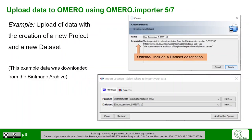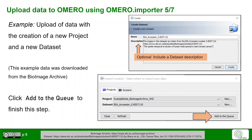Let's create a new project and a new dataset. Here we downloaded images from the BioImage Archive to show the process. Upon clicking New in the lower window, you can choose the name and optionally include a description for your new dataset or project. Click Create to finish, then click Add to the queue.